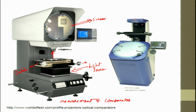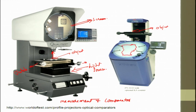You can place the object here on the table. The light hits the object and then you can see the magnified image on the screen. It is a very powerful tool and even now it finds a lot of application in tool room applications.